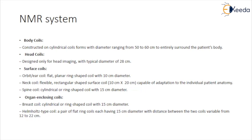Neck coil: flexible, rectangular-shaped surface coil capable of adaptation to the individual patient anatomy. Spine coil: cylindrical or ring-shaped coil with 15 cm diameter. Organ-enclosing coils — breast coil: cylindrical or ring-shaped coil with a 15 cm diameter. Helmholtz type coil: a pair of flat ring coils each having 15 cm diameter with the distance between the two coils variable from 12 to 22 cm.